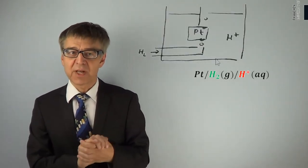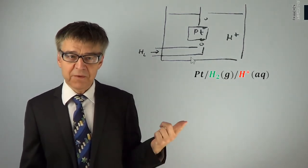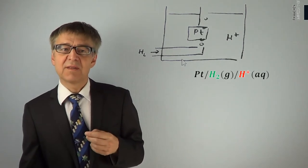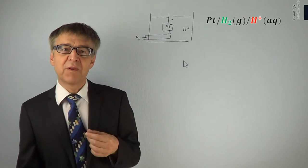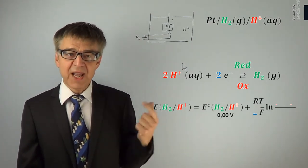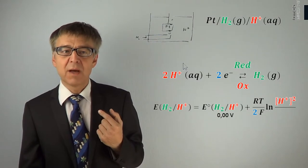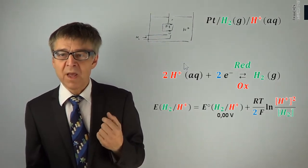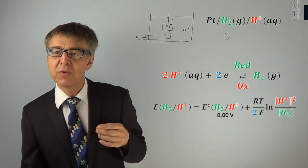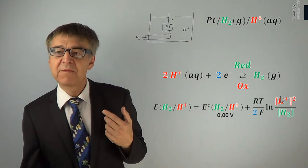In gas electrodes, a special case of a non-metal electrode, three phases have to be in contact: a gaseous phase, a liquid phase (the electrolyte), and an electronic conductor (a solid phase). The classic reference electrode in chemistry is the hydrogen electrode. Let's calculate its potential using the Nernst equation. By definition, the standard potential is zero. There are two electrons involved in the Nernst factor. We have to divide the square of the proton concentration by the hydrogen concentration. According to thermodynamic convention, the concentration of a gas like hydrogen has to be specified in bar, and the concentration of a dissolved species like protons in moles per liter.